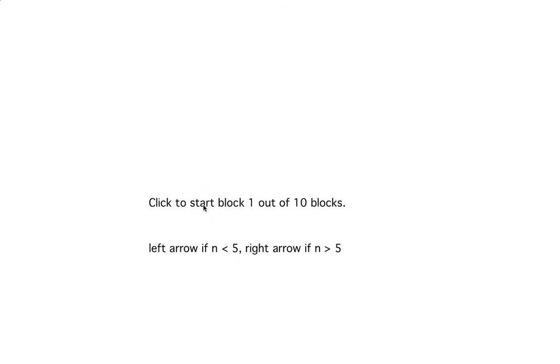This is the beginning of each block. My program actually tells participants where they are. So it says this is the beginning of the block, the first block out of a total of 10. They're supposed to press the left arrow button if the number shown to them is less than 5, or the right arrow button if the number is greater than 5. So I'm going to click to start.